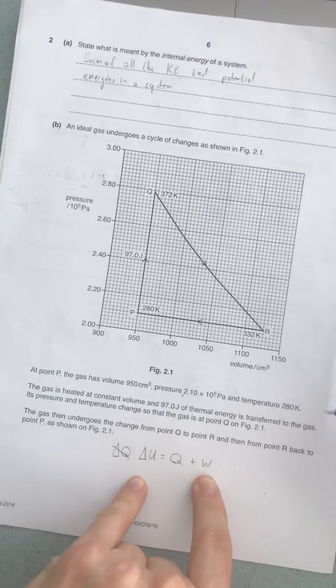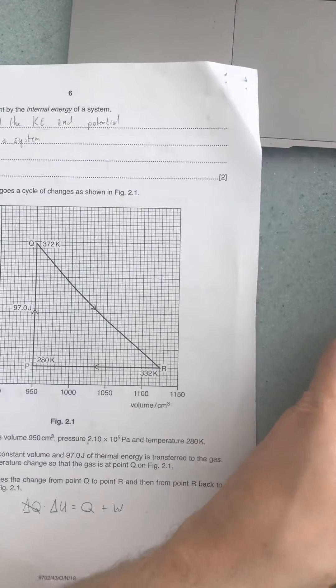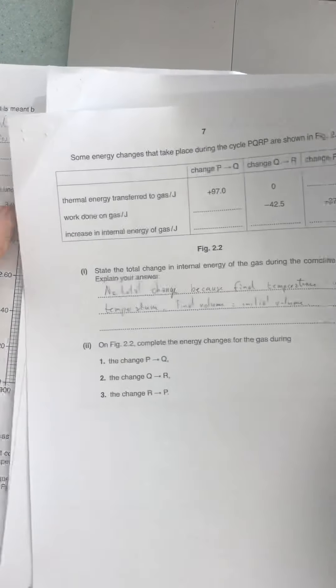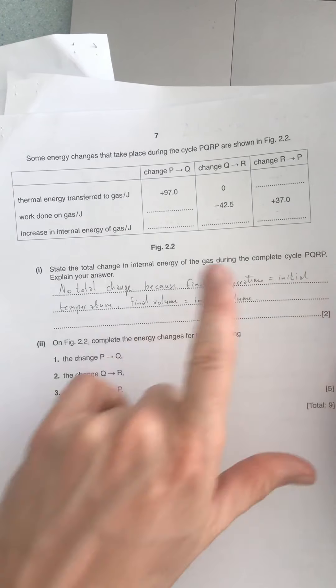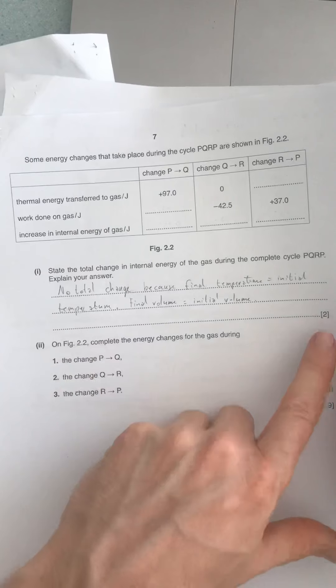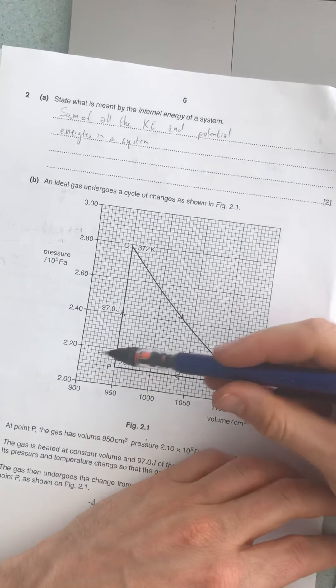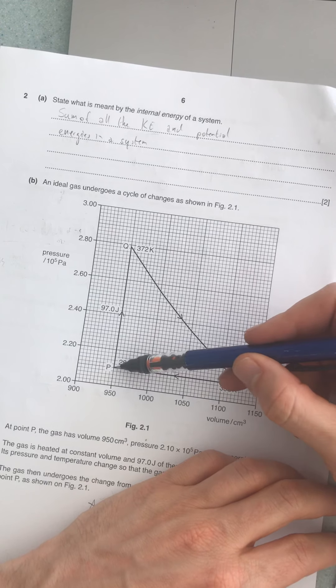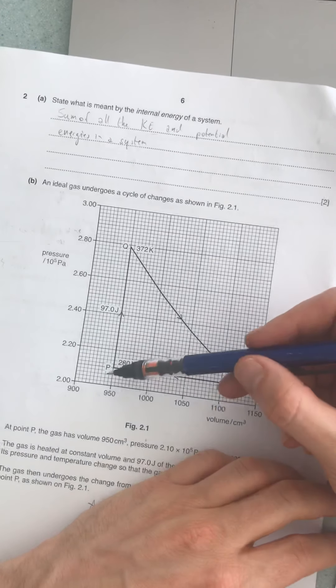Considering that will allow us to answer the subsequent questions much more easily. It's asking us to state the total change in internal energy of the gas during one complete cycle PQRP and explain your answer. You got two marks for that. We got PQRP and you'll see that it returns to the same state it was previously.